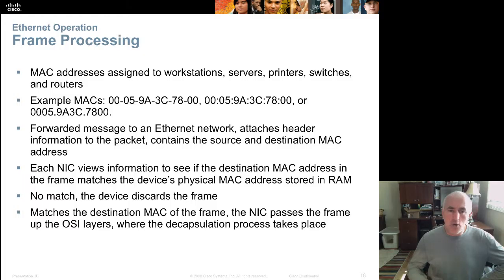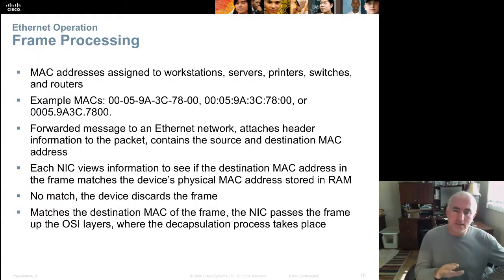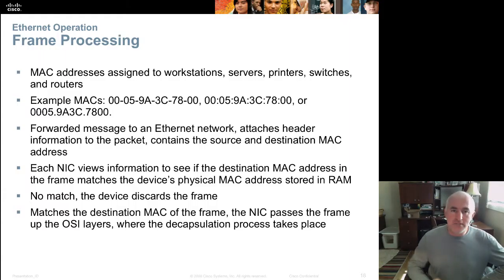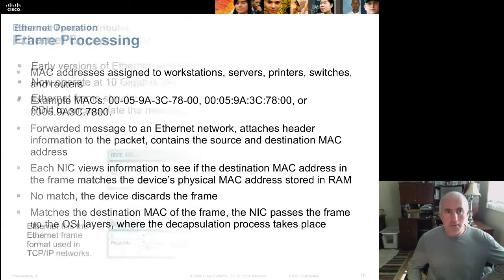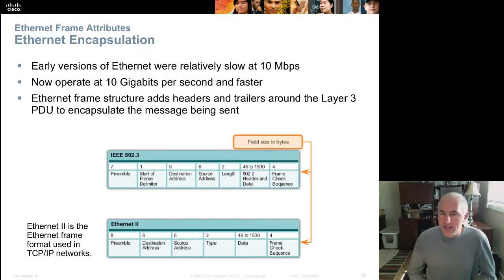When an incoming frame arrives, the network card looks at the destination field and reads the MAC address. If it doesn't match its own MAC address, the frame is discarded and never passed up the OSI layers, wasting none of the operating system's CPU or RAM resources — all done with specialty chips on the network card.